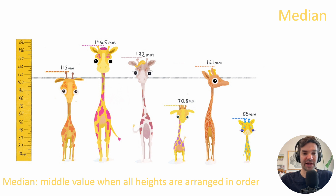You can also calculate a median. Pause the screen if you want to see how that differs from the mean, but you'll find the median is 117 millimeters.